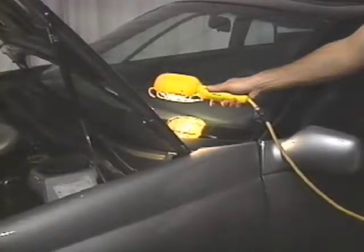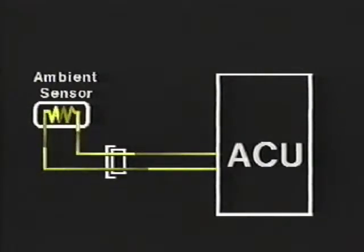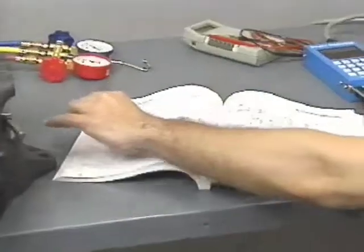Special attention must be given to code 13, which indicates an open sun sensor circuit. If the vehicle is being checked in a shaded area or under fluorescent lighting, the code may be invalid. If, after directing an incandescent light source at the sensor, the code still appears, it is valid. Most fault codes only indicate a complete failure, either an open or short circuit. If a system failure occurs and a fault code is not available, refer to the service manual for inspection procedures based on fault symptoms.